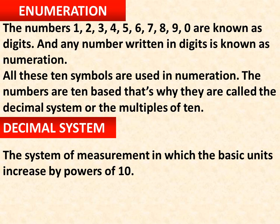According to the book: the numbers one, two, three, four, five, six, seven, eight, nine, and zero are known as digits, and any number written in digits is known as numeration. All these ten symbols are used in numbers. The numbers are ten-based, that's why they are called the decimal system, or multiples of ten.